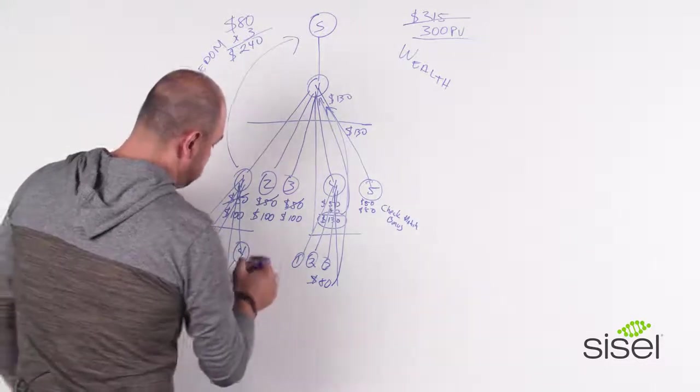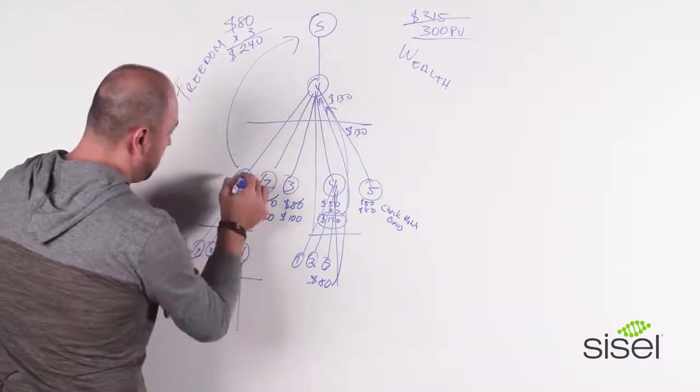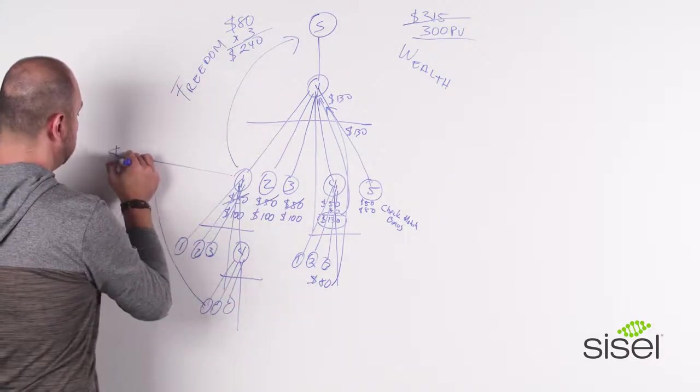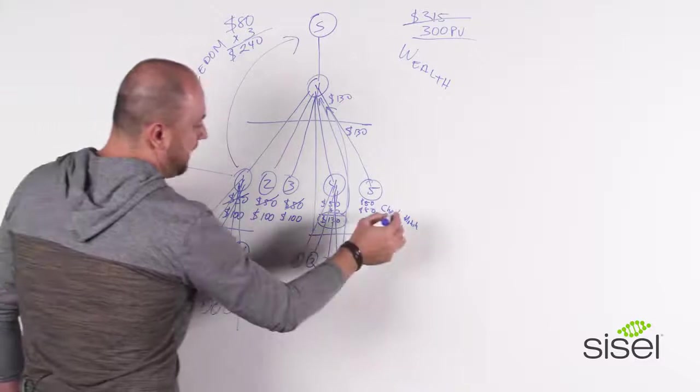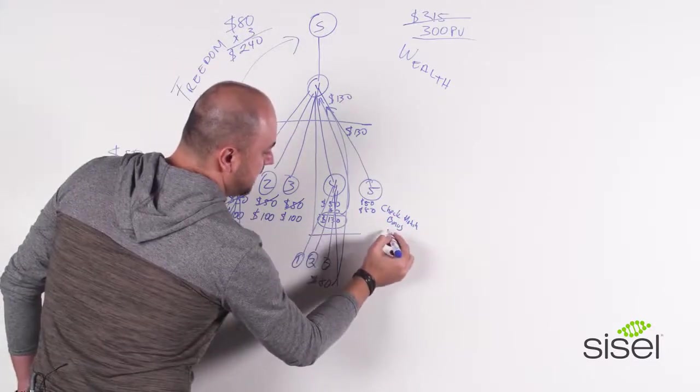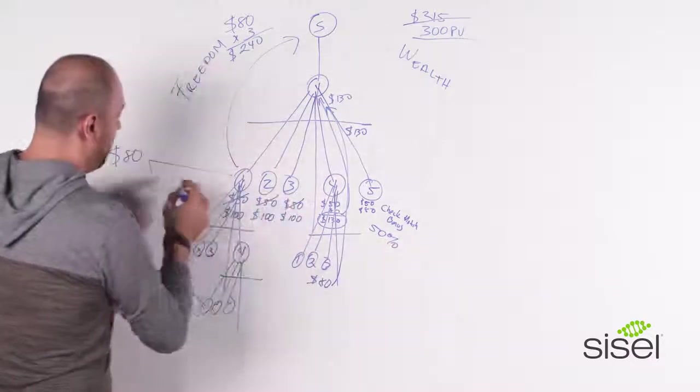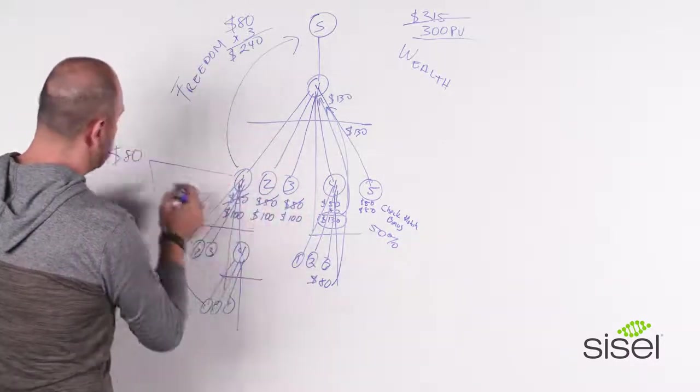So this will generate your number one to get their $80 each. So the check match, how this works is that you're basically going to get 50% of whatever your one, two, and three generate.